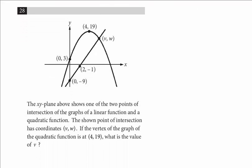The xy-plane above shows one of the two points of intersection of the graphs of a linear function and a quadratic function. The shown point of intersection has coordinates v, w. If the vertex of the graph of the quadratic function is at (4, 19), what is the value of v?